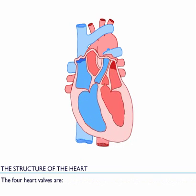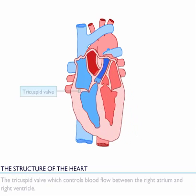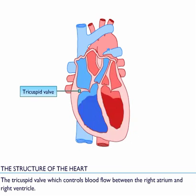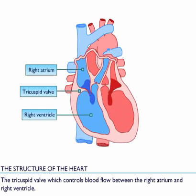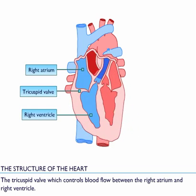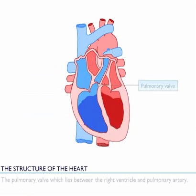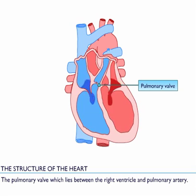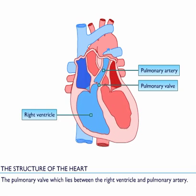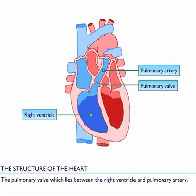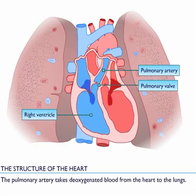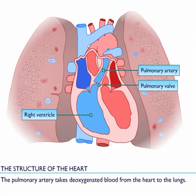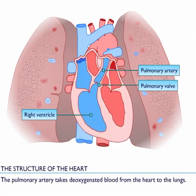The four heart valves are: the tricuspid valve, which controls blood flow between the right atrium and right ventricle; and the pulmonary valve, which lies between the right ventricle and pulmonary artery. The pulmonary artery takes deoxygenated blood from the heart to the lungs.